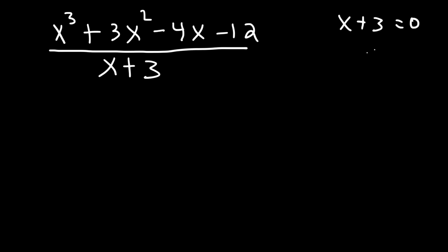Let's say we have the polynomial x cubed plus 3x squared minus 4x minus 12, and we wish to divide it by x plus 3. How can we use synthetic division to do so? If we set x plus 3 equal to 0, and if we solve for x, we'll get that x is negative 3.